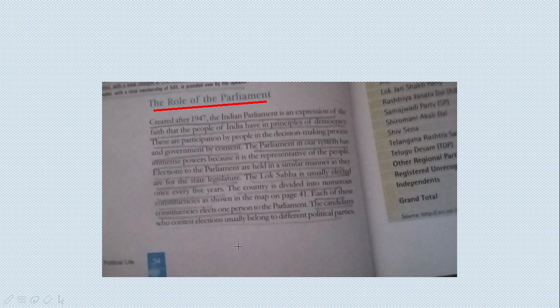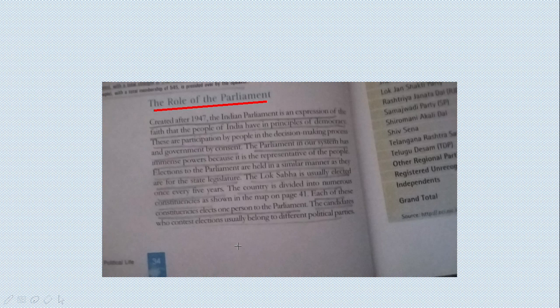The elections of Parliament are similar to those of the people and the state legislature. The people elected usually serve for 5 years. The country is divided into many constituencies, as shown on page 41. One MP is elected from each constituency. These MPs are appointed to their political parties and are called members of different political parties.